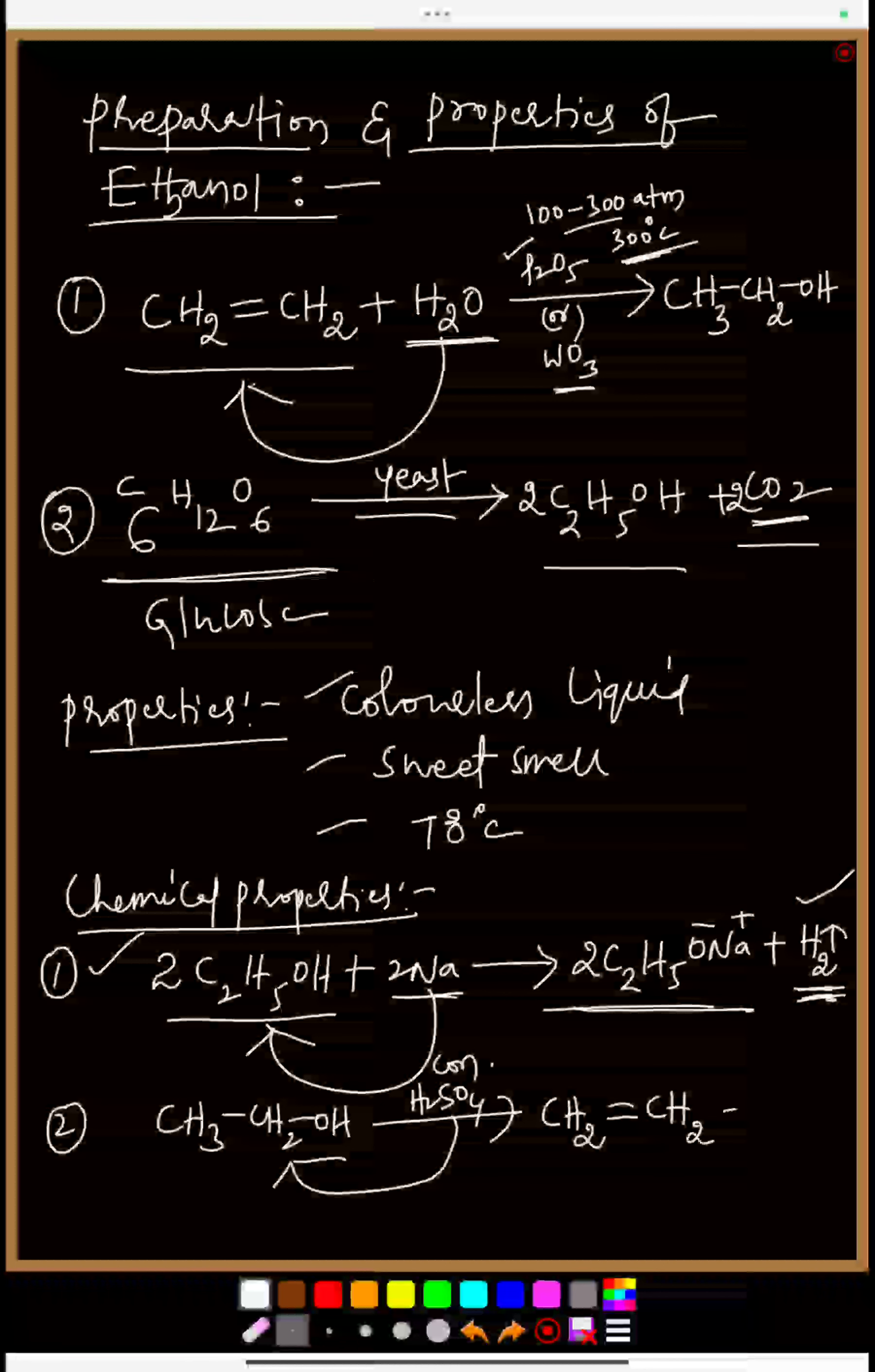So the product is alkene - that is ethene - and water molecule is going out. So alcohols are converting into alkene in presence of a strong dehydrating agent that is sulfuric acid.